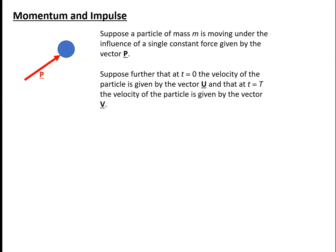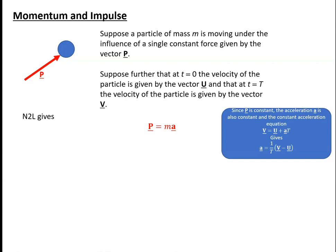Suppose we've got a particle of mass m moving under the influence of a single constant force given by the vector p. Suppose further that at t equals 0, the velocity of the particle is given by the vector u, and at time t, the velocity of the particle is given by the vector v. Then, using Newton's second law, since there's only the one force acting, we've simply got p must equal the mass times the acceleration. Constant acceleration equations can be applied because p is constant and therefore a is constant. Using v equals u plus at, we get p equals m divided by t times v minus u.